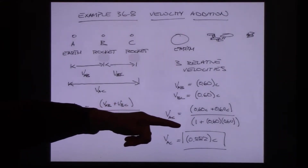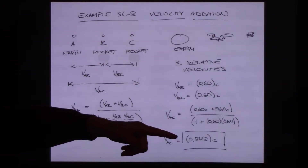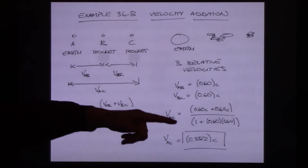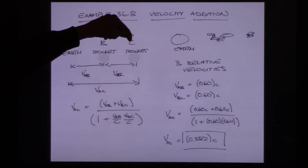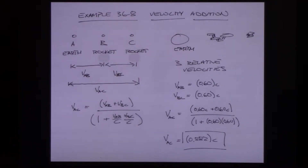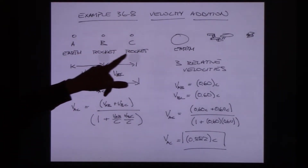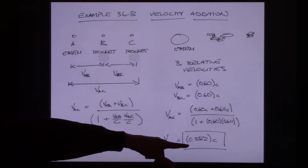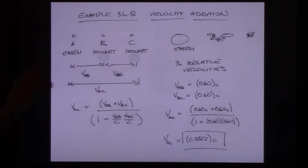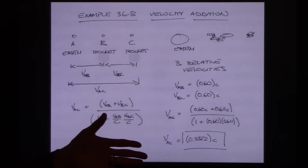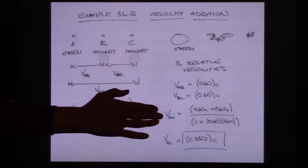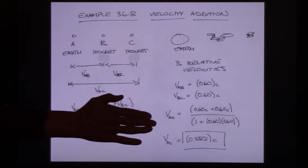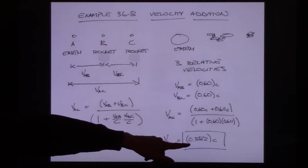Within one reference frame you can have something traveling near the speed of light in one direction and something at speed of light in the other direction, and the relative speed between them could be up to 2c — that's the highest relative velocity you'll measure within one frame. But when an observer on Earth asks how fast rocket C is moving, in Earth's frame rocket C is only moving away at 0.882c, and the separation speed between the two rockets is only 0.282c.